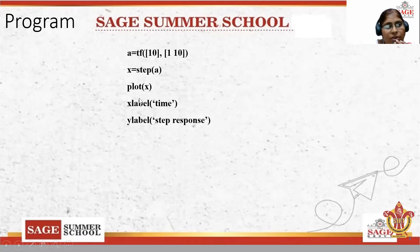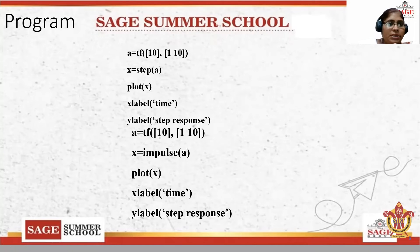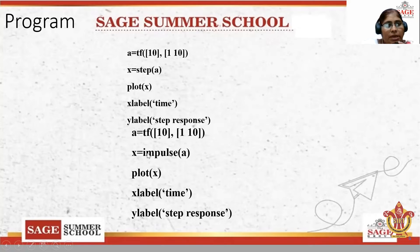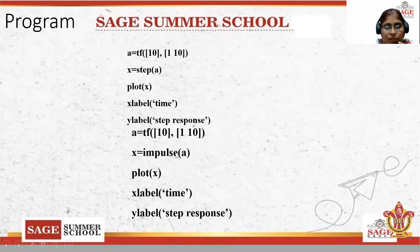Similarly, if the impulse input is given, the impulse response can also be drawn in MATLAB using the 'impulse' command. First write the transfer function, then write Y = impulse(a), where a is the variable of the transfer function. Then do the plotting and labeling.